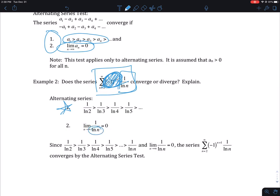Then I look at the limit as n approaches infinity of 1/ln(n). 1 over something very large goes to 0. Check. So because both of those things are true, this series converges by the alternating series test. And that is it for this lesson.